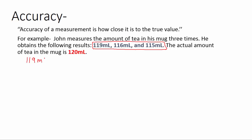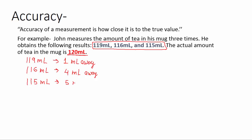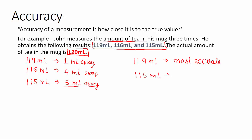119 ml is 1 ml away from the true value. 116 ml is 4 ml away, and 115 ml is 5 ml away from the actual value. So 119 ml is the most accurate value. Next comes 116 ml, which is 4 ml away. Then 115 ml, which is the farthest from 120 ml at 5 ml away — so 115 ml is the least accurate value.